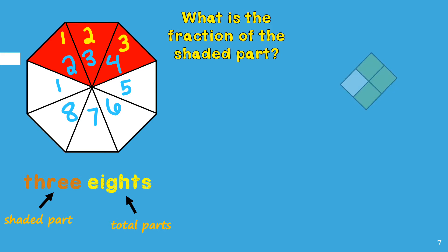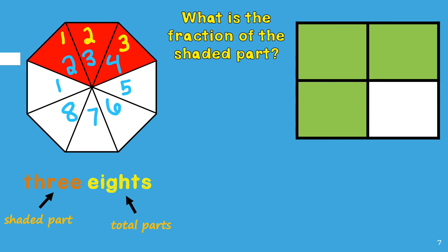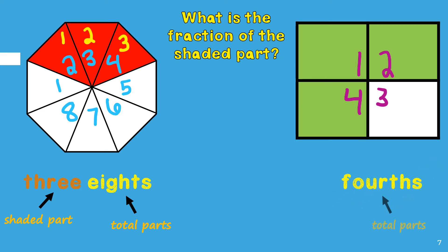Now let's look at this fraction here. What is the fraction of the shaded part in this one? To figure out the answer I will first count the total number of parts in the shape: one, two, three, four. Since there are four parts in the shape it is partitioned into fourths. Remember this word represents the total number of parts. Now we are going to count the shaded part of the figures.